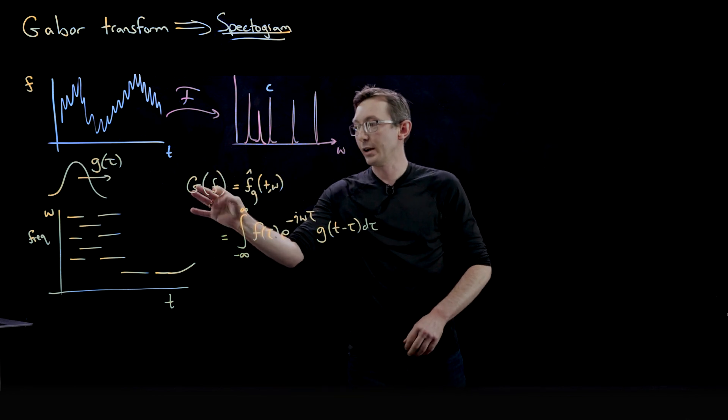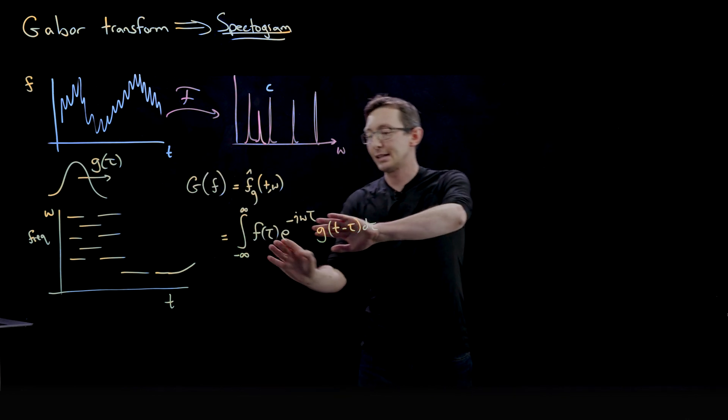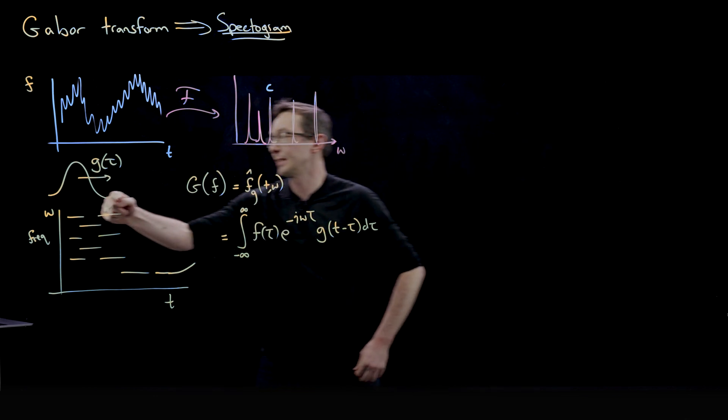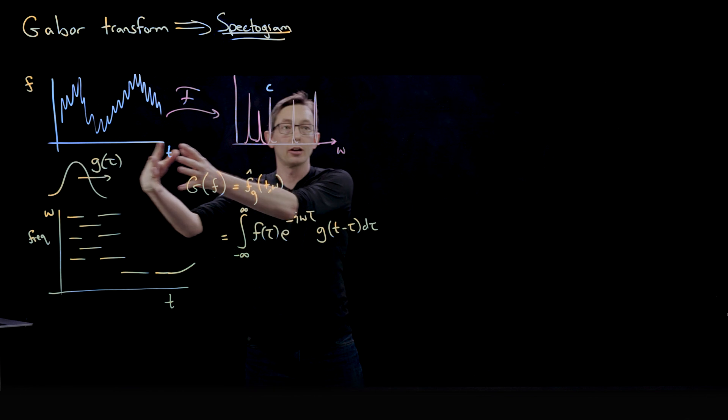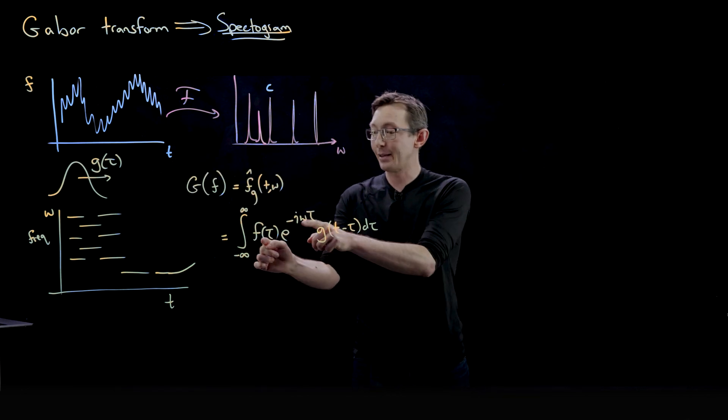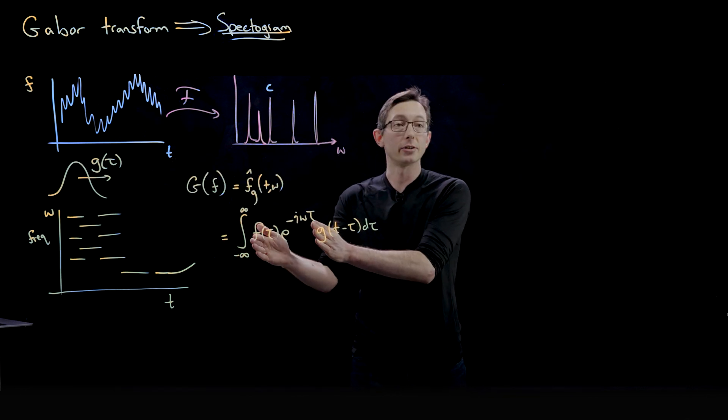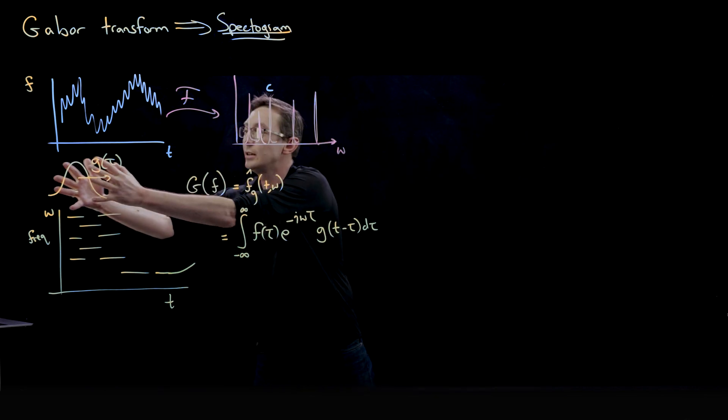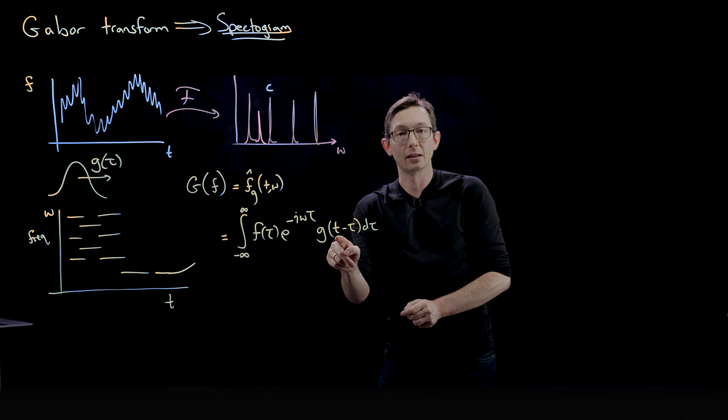So this Gabor transform of f is basically just the Fourier transform of f, but weighted by this little Gaussian window that's sliding across. So I get something that's a function of frequency because I'm Fourier transforming.